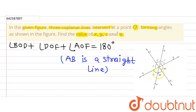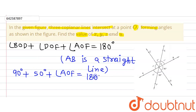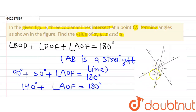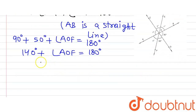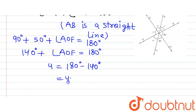On putting the values, we have angle BOD as 90 degrees and angle DOF as 50 degrees. So 90 plus 50 plus angle AOF equals 180 degrees. That gives us 140 degrees plus angle AOF equals 180 degrees. Now angle AOF is U, so 140 degrees plus U equals 180 degrees. Moving 140 to the other side gives us 180 minus 140,